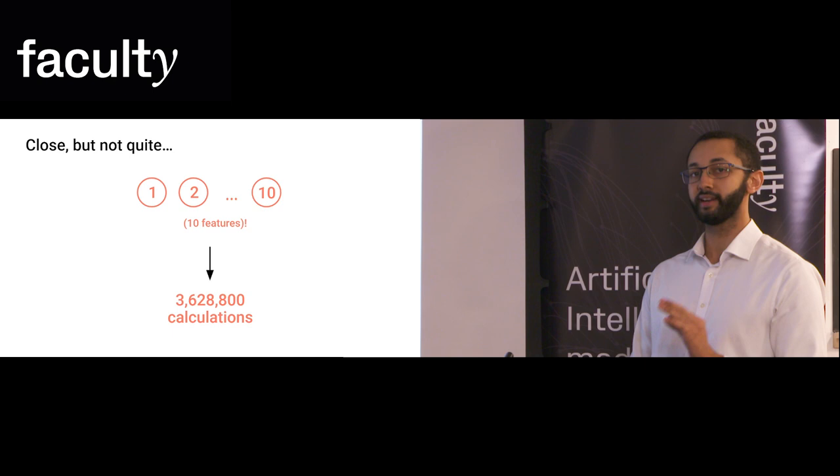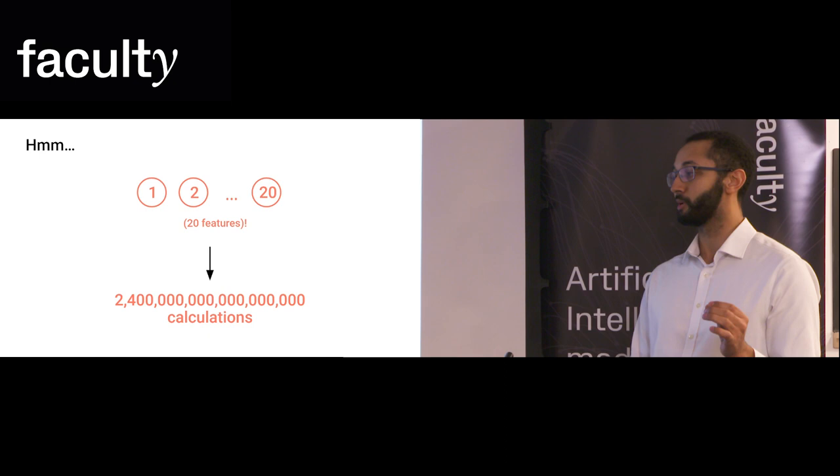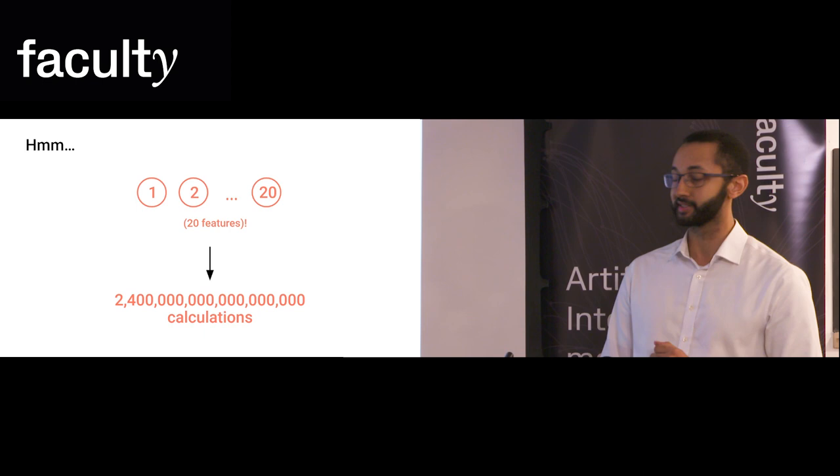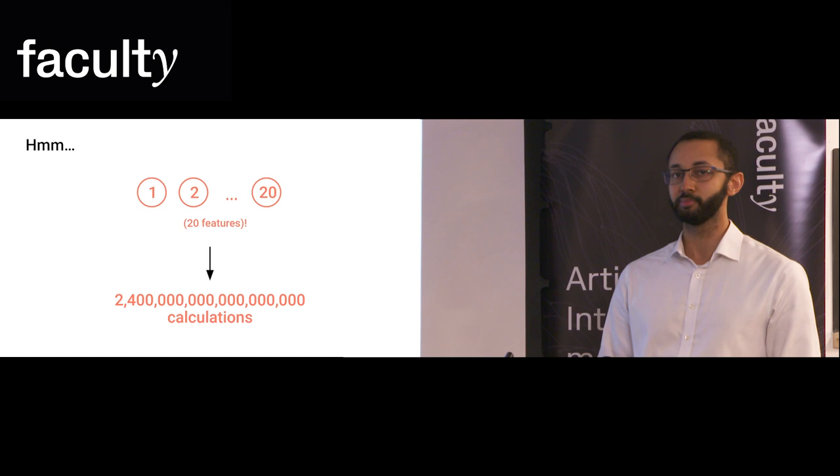If we have 10 features, suddenly we have three and a half million different combinations of these 10 features. And if we go to 20, which is a fairly reasonable number for a data set, suddenly we have to do two followed by 18 zeros worth of calculations. For a sense of scale of how large this number is, if a supercomputer were doing 1 billion calculations per second since the moment you were born, it would not give you the result until you reach the ripe old age of 75.